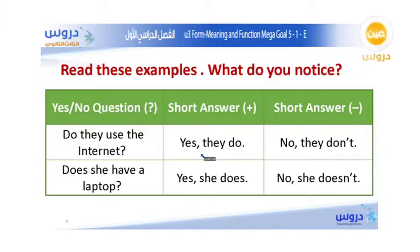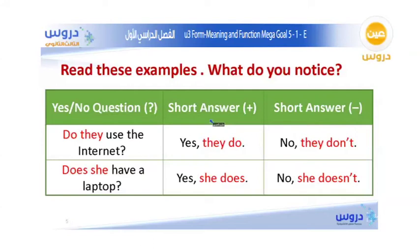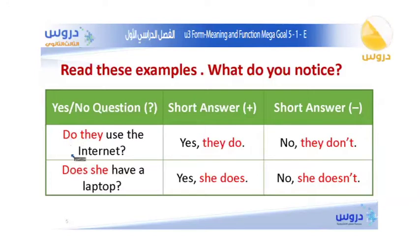Remember, this is the simple present tense. These are examples of how we make a simple question in the simple present tense. If we want to make a yes or no question in the simple present tense, we should use either do or does.